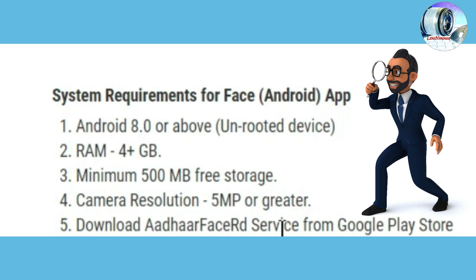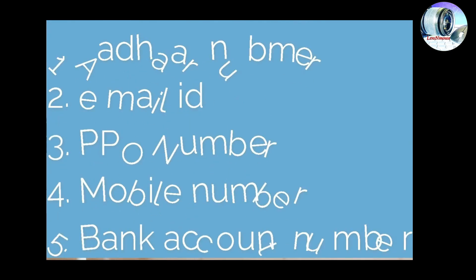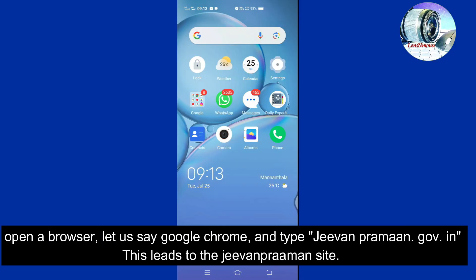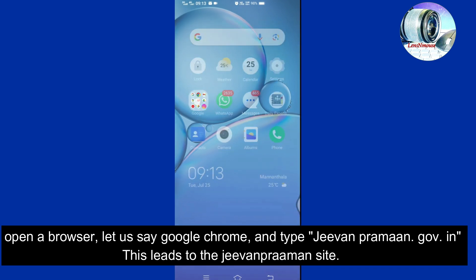We must have a net connection on the mobile. Keep these documents ready for reference while entering details: Aadhaar number, mobile number linked with Aadhaar, bank account email address, PPO number, and the bank account number into which the pension is being deposited.